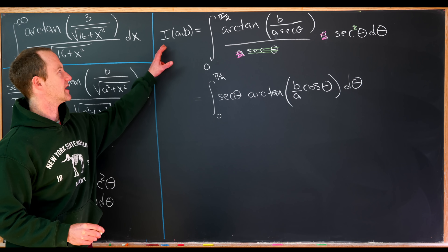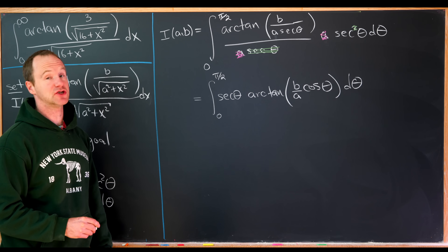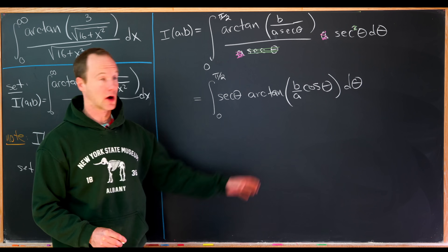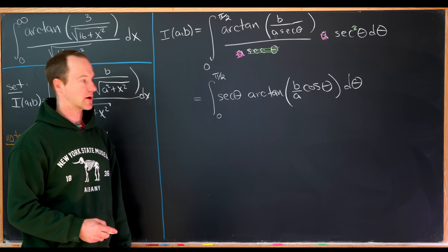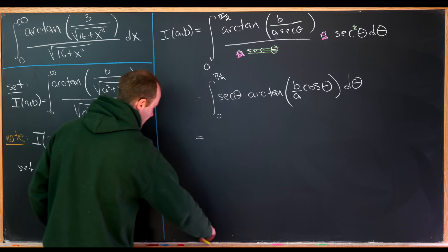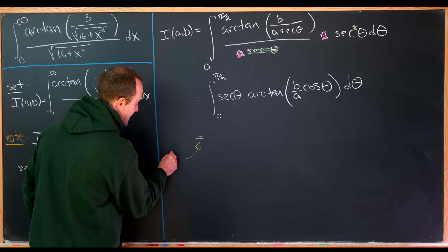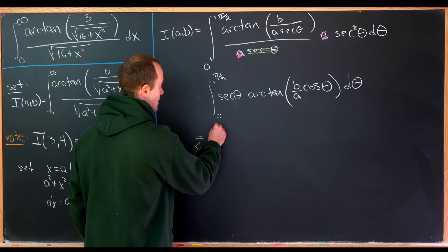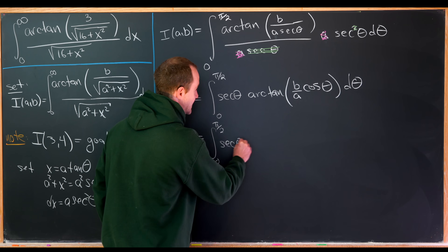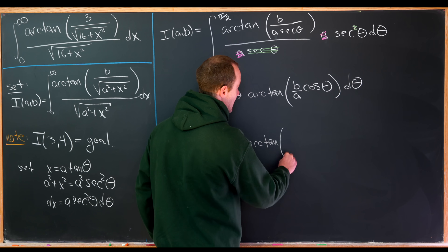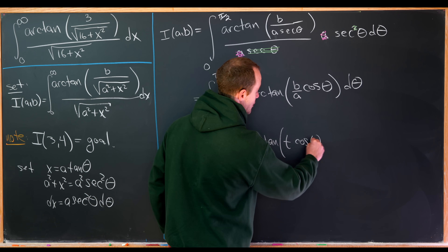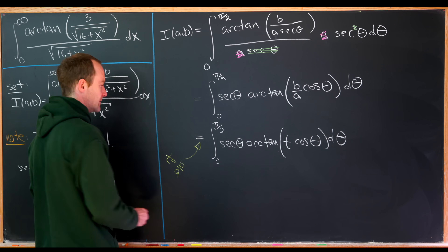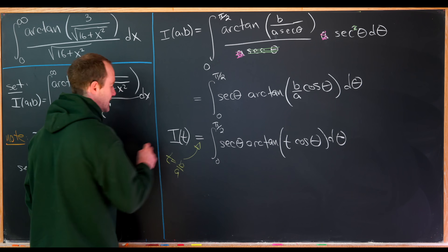It's pretty interesting that our integral, which seems to depend on two parameters, in fact only depends on one parameter because b and a occur only in the form b over a. We can reparametrize by setting t equal to b over a, giving us the integral from zero to pi over two of secant of theta times arctan of t times cosine theta d theta. We'll call this I(t).